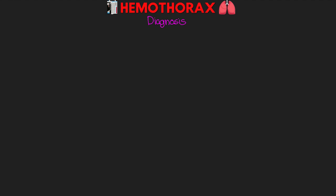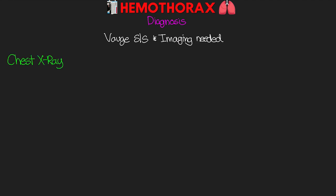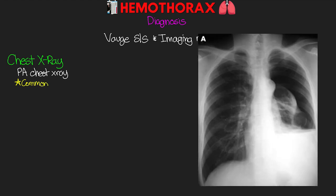The signs and symptoms of hemothorax are going to be vague, so imaging is really going to be needed. The first imaging we'll talk about is the chest x-ray. The posterior-anterior or PA chest x-ray is commonly used to diagnose a hemothorax. Here's an example of a pretty sizable hemothorax in the patient's left lung.